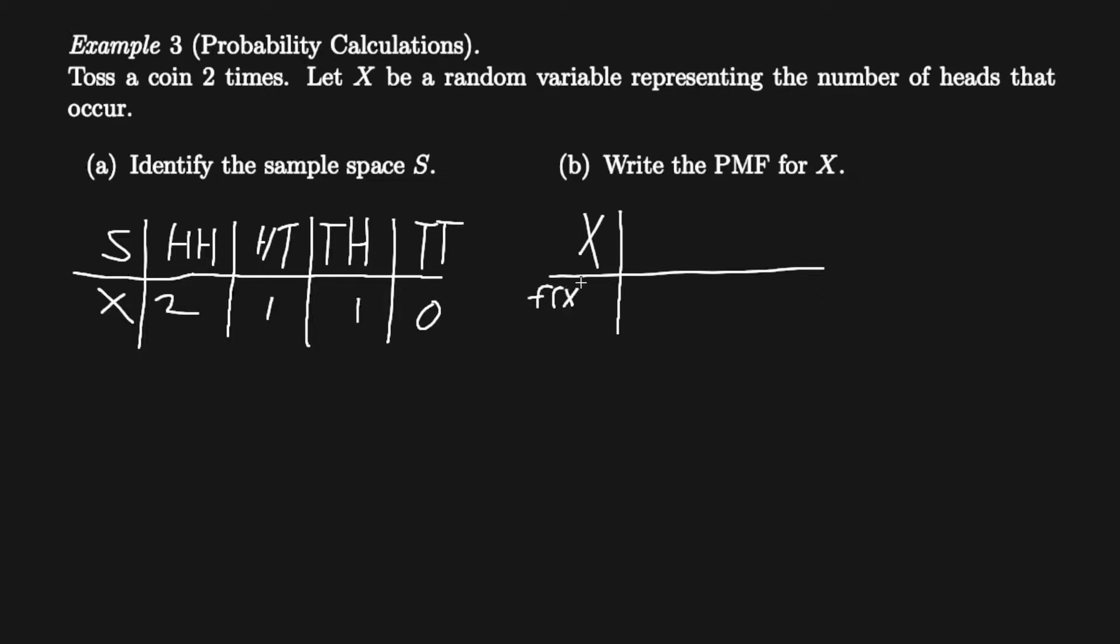Now the PMF, we can write this as our X values as zero, one, two. And as we get zero, we would get one fourth. And when we get one, we get two fourths or one half, and two heads would give us just one fourth.